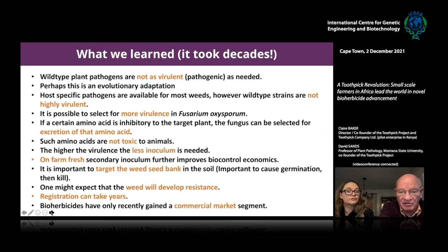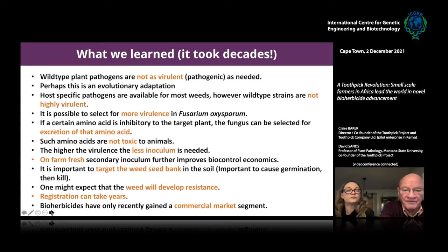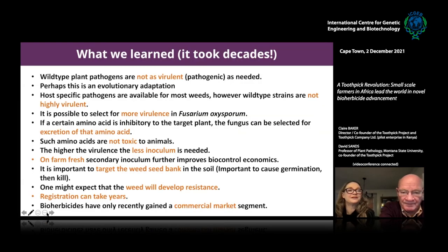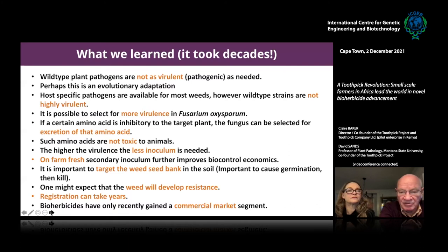The more virulent we can make a pathogen, the less inoculum is needed — that's our real incentive. Often these pathogens stay in the soil for years, which is a really different model than the normal chemical herbicide model. We also found that producing farm-fresh fungus right on the farm is the way to go economically. We also have to try to wipe out weed seeds in the soil, sometimes getting them to germinate using methionine production by the fungus.